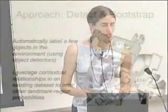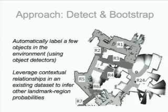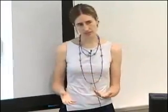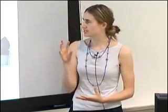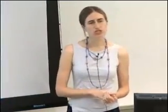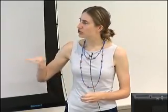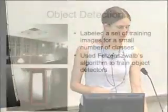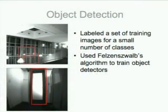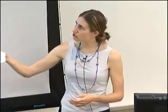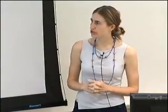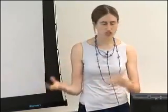So we take a different approach: detect and bootstrap. We build up a few object detectors, run them in our environment, and get a small set of object detections. Then we leverage contextual relationships in an existing database to infer landmark probabilities for a huge number of other landmarks. For the first part, we train a few object detectors — for example, railings and doors — using Bells and Schwab's algorithm, labeling images by hand and running them over our environment.